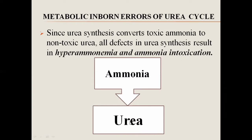If there is a genetic defect, urea cycle disorders are very rare. But in some cases, ammonia intoxication occurs when there is a defect or disorder in the urea synthesis, meaning the enzymes involved in the urea synthesis are defective. As a result, ammonia will not be able to convert into urea and will accumulate inside the blood. The accumulation of ammonia in the blood is known as hyperammonia, which leads to toxicity and ammonia intoxication.